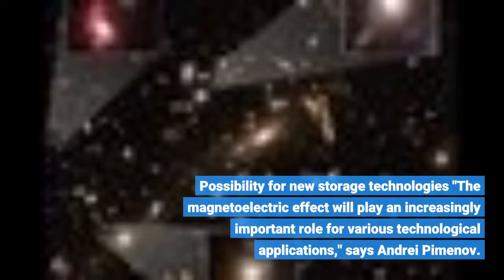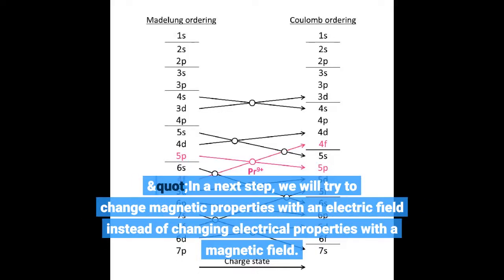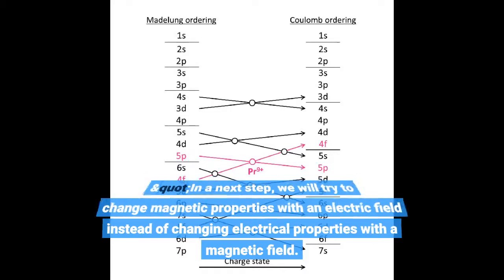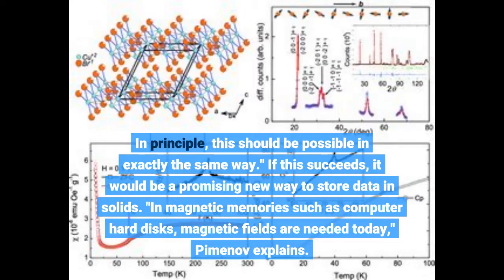Possibility for new storage technologies. The magnetoelectric effect will play an increasingly important role for various technological applications, says Andrey Piminov. In a next step, we will try to change magnetic properties with an electric field instead of changing electrical properties with a magnetic field. In principle, this should be possible in exactly the same way. If this succeeds, it would be a promising new way to store data in solids.